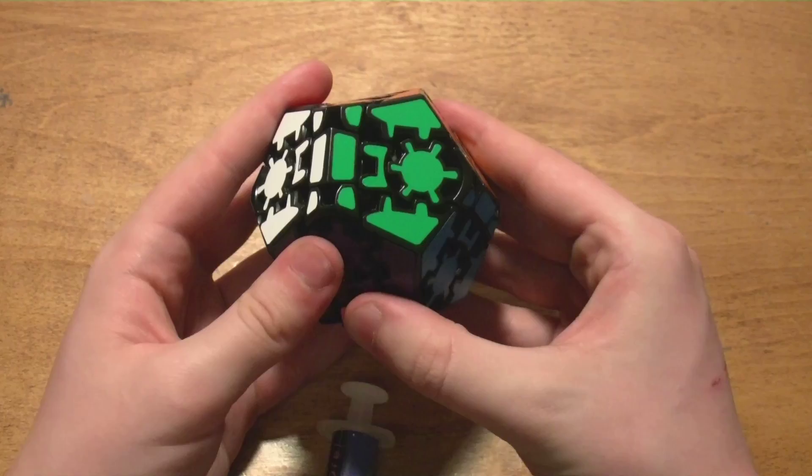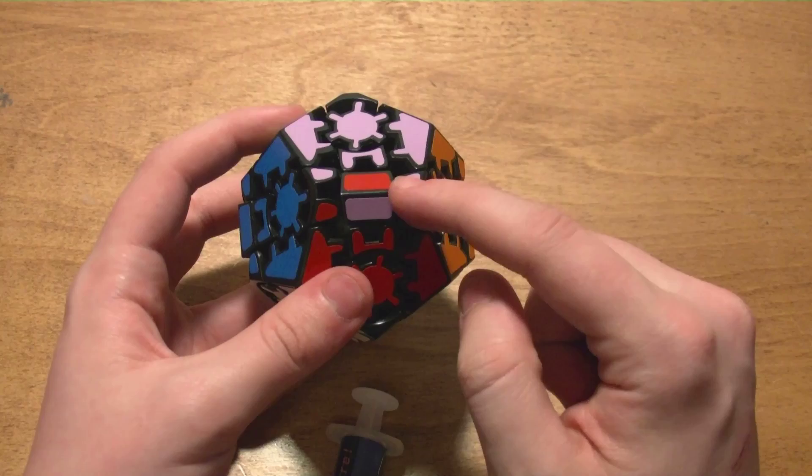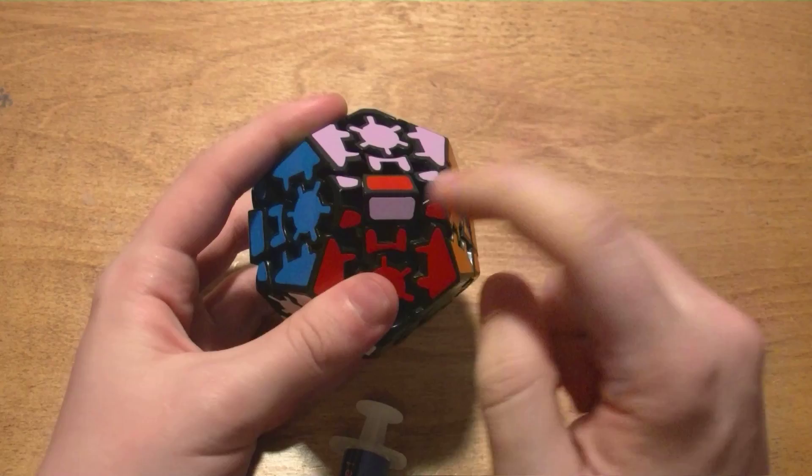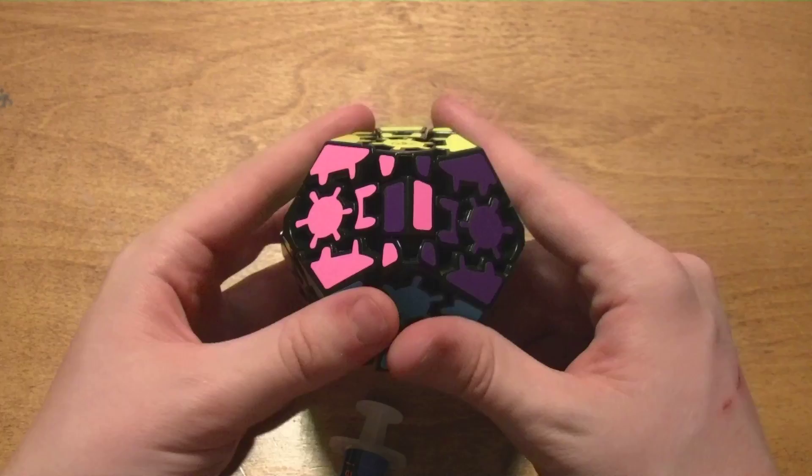But as I was solving it, I realized that these centers got oriented before. And one problem with this puzzle is that the center caps like to pop a lot. So every time I saw this prior, I thought that the caps had just popped off and I just put them on wrong.